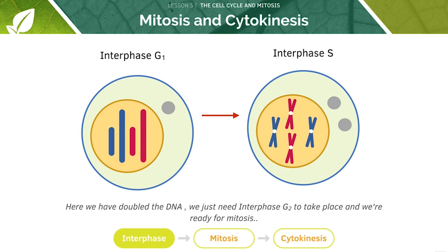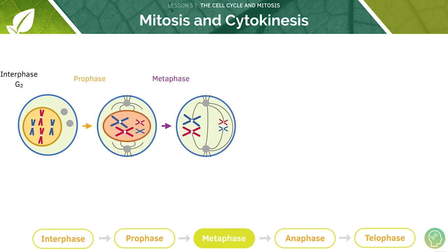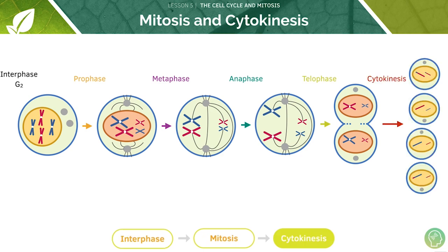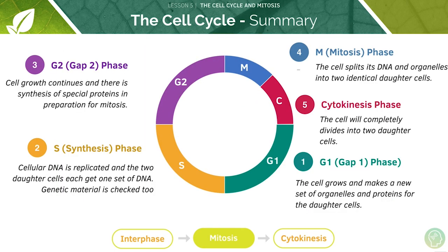Here we can see the difference between interphase G1 and interphase S. Just like we learned in the previous tutorial, we have interphase G2, then prophase, metaphase, anaphase, telophase, and finally cytokinesis. This is a good summary of the cell cycle, and here is a diagrammatic version.